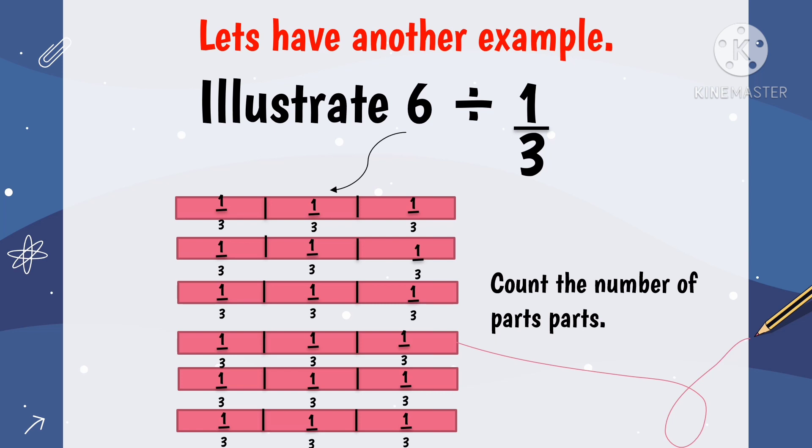1, 2, 3, 4, 5, 6, 7, 8, 9, 10, 11, 12, 13, 14, 15, 16, 17, 18. So, 18 is what we got as 1 third from the 6 whole numbers.